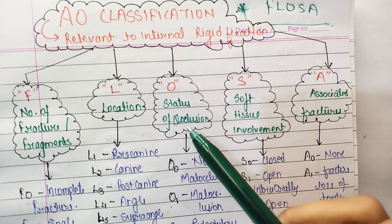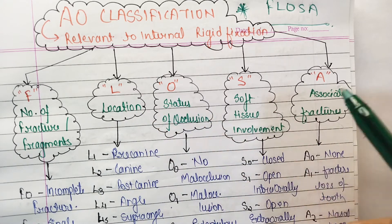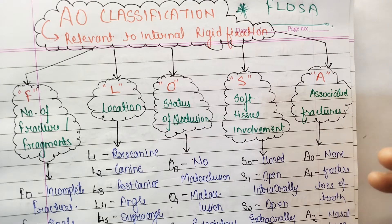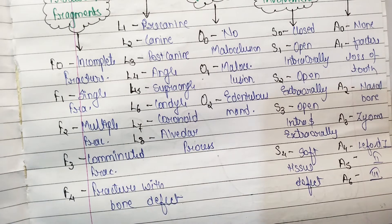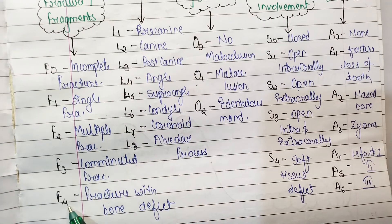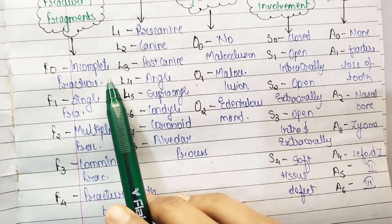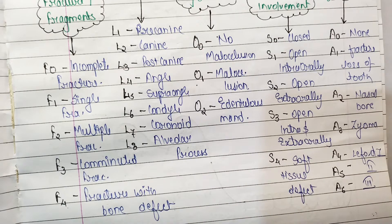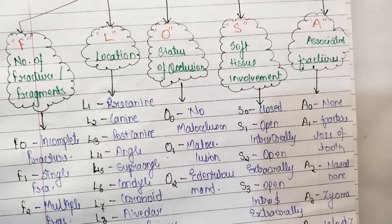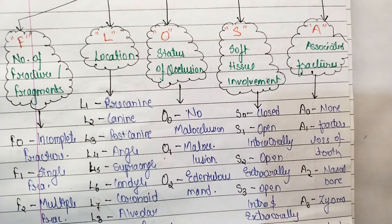Under F — number of fragments — the numbering goes from F0 to F4: F0 means incomplete fracture, F1 means single fracture, F2 means multiple fractures, F3 means comminuted fracture, and F4 means fracture with bone defect, which is a very complex condition.